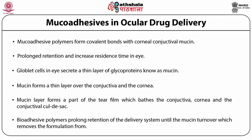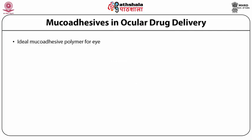An ideal mucoadhesive polymer for the eye should meet certain criteria such as having an appropriate charge density, presence of polar groups for hydrogen bonding, and an optimum balance of hydrophilic and lipophilic sections in the polymer. The polymers prolong retention of the delivery system until mucin turnover removes the formulation from the mucosal surface. Mucoadhesive polymers like chitosan, carbomers, hyaluronic acid, and cellulosic derivatives are abundantly used for achieving mucoadhesion.